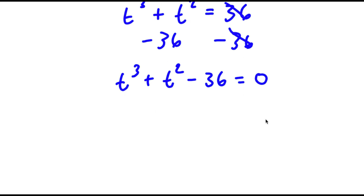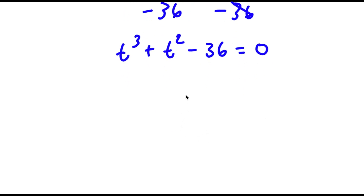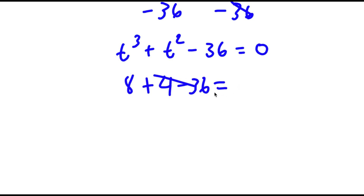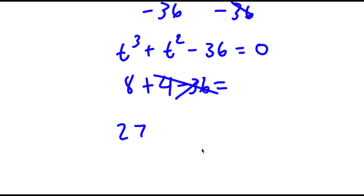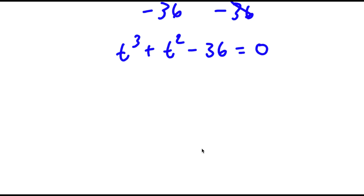To solve this, I need to find one value of t to find the rest. So I'm going to start plugging in values. If I plugged in 0, that would just be negative 36. If I plugged in 1, that wouldn't work. Plugging in 2: 2 to the power of 3 is 8, plus 2 squared is 4, minus 36 — that would not work. Plugging in 3: that would be 27 plus 9 minus 36, which works because 27 plus 9 is 36, so 36 minus 36 is 0. So t equals 3 is one value of t.